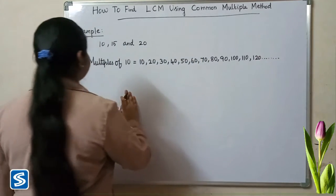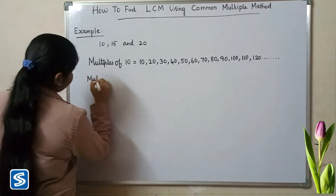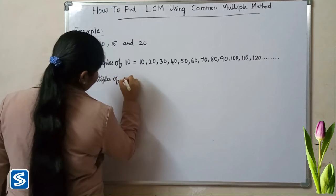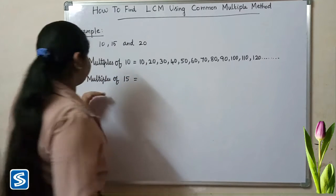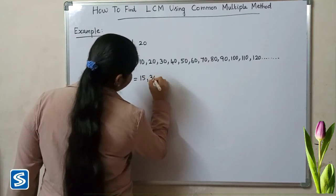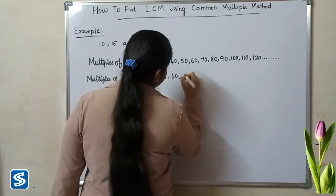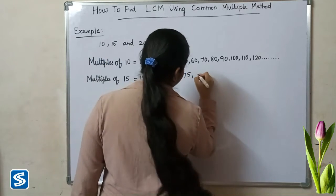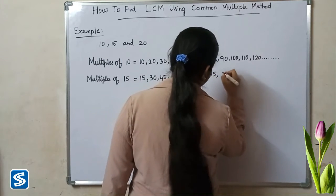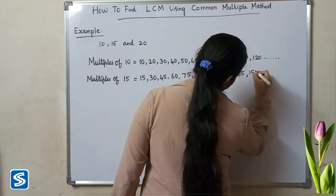So now we have to find the multiples of 15. Multiples of 15 are: 15 ones are 15, 15 twos are 30, 15 threes are 45, 15 fours are 60, 15 fives are 75, 90, 105, 120, 135, 150, and so on.